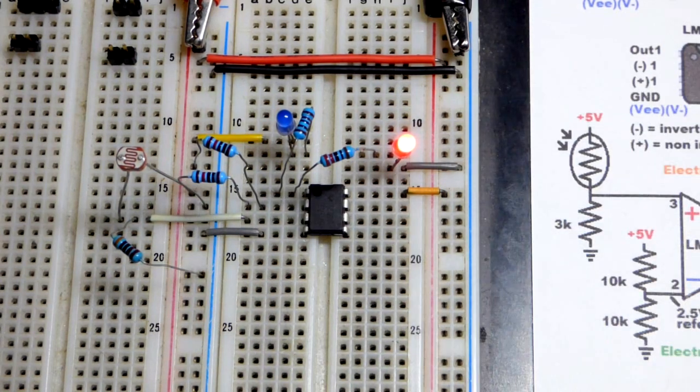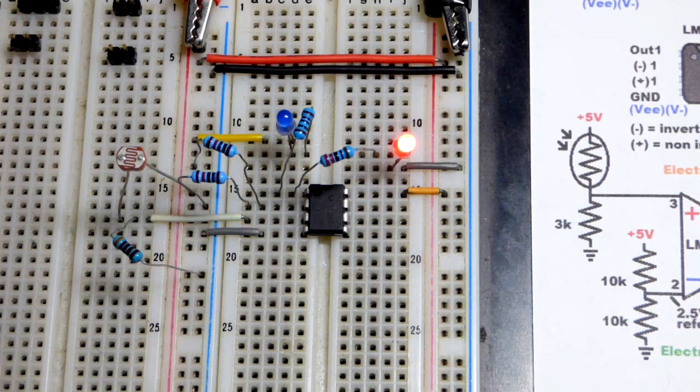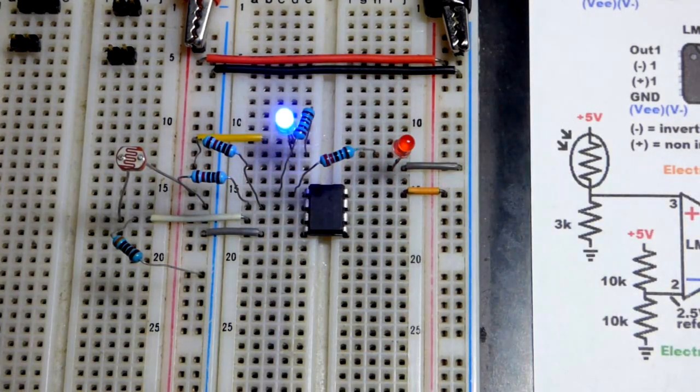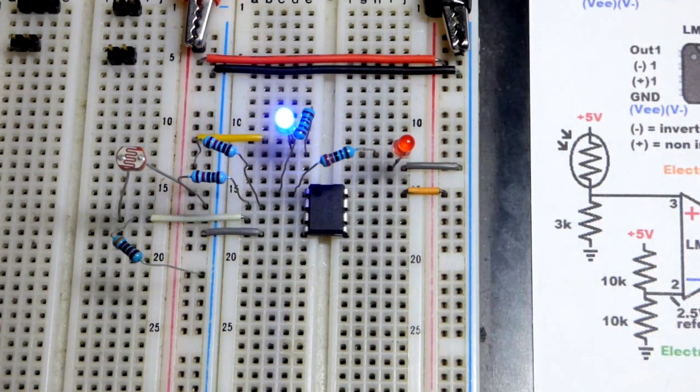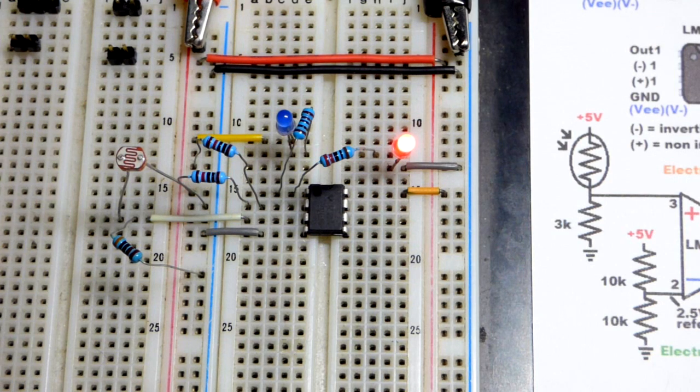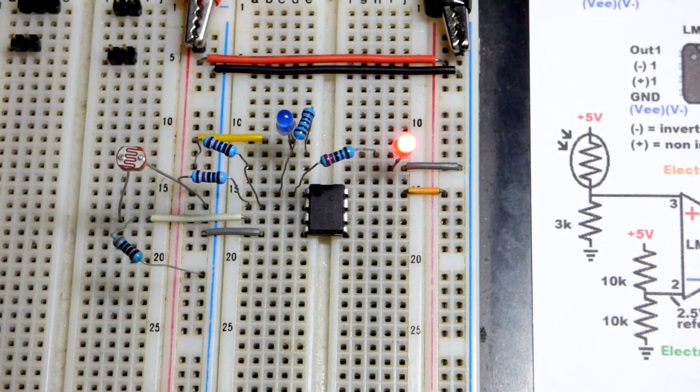As long as enough light is falling on the light-dependent resistor, it has a higher voltage at the non-inverting input. I can turn the lamp off there, and I can also dim the lamp. There we go. I dimmed it down a little. It was dark enough to set the output low. Now it's bright enough to hold the output high, unless my finger covers it.